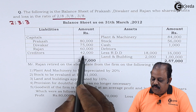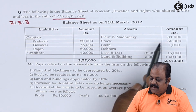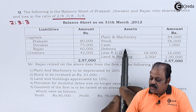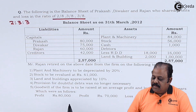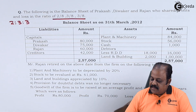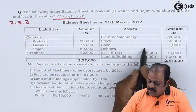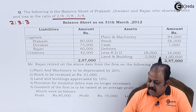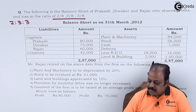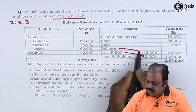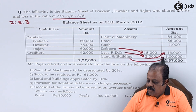Creditors 42,000. Asset side: plant and machinery 84,000, stock 56,000, cash 1,000, debtors 18,000 less provision for doubtful debts (RDD) 2,000, giving net debtors of 16,000.